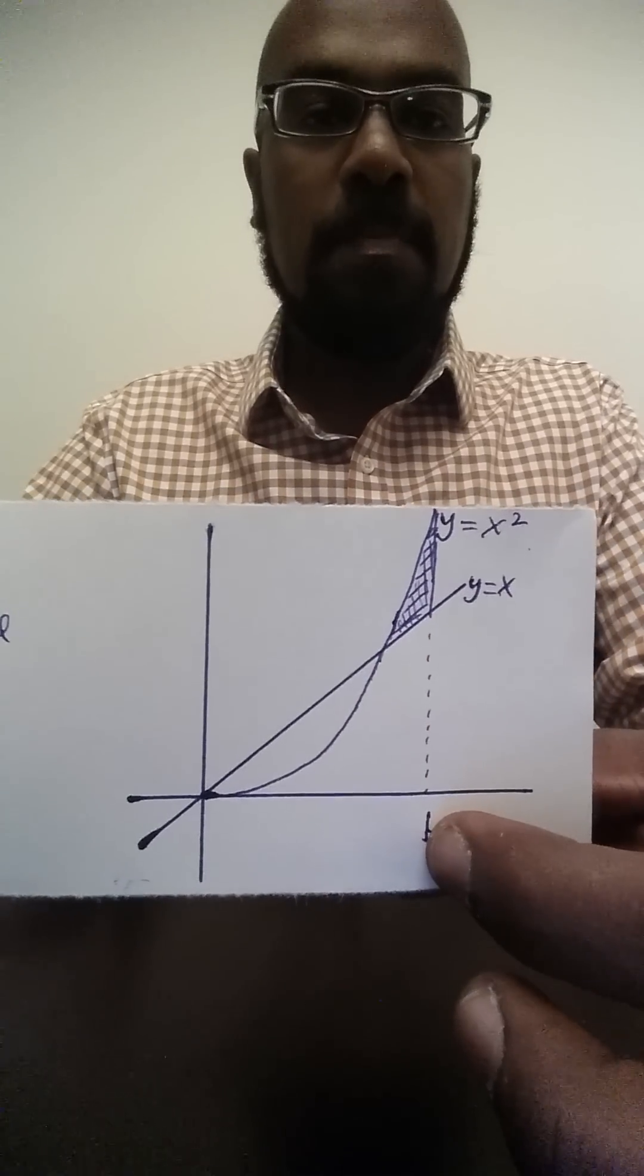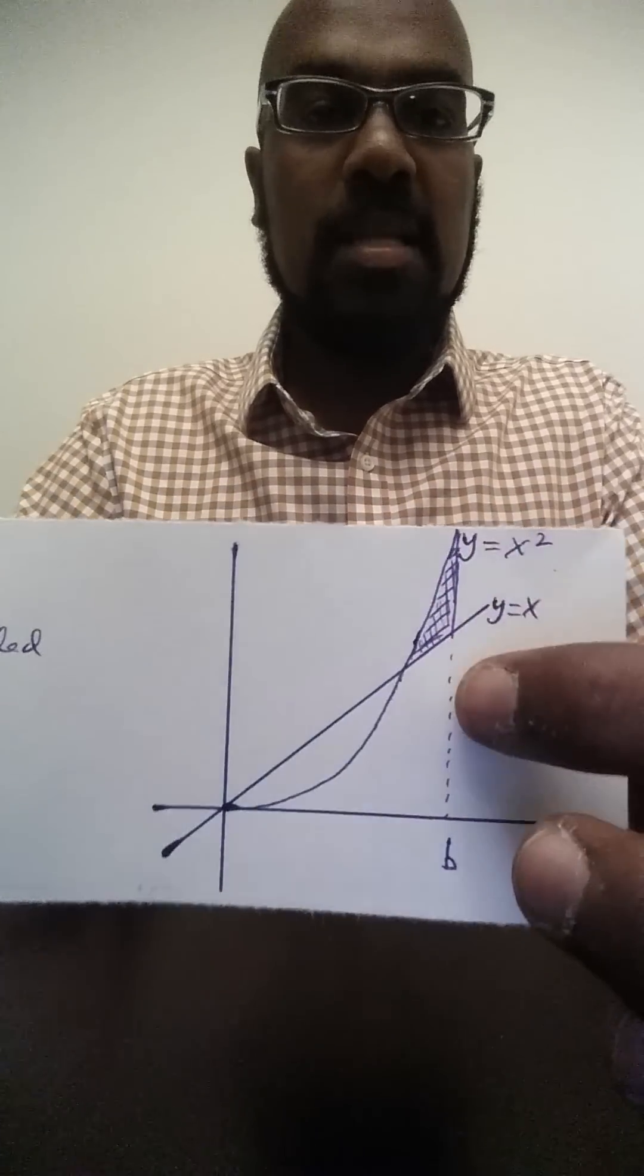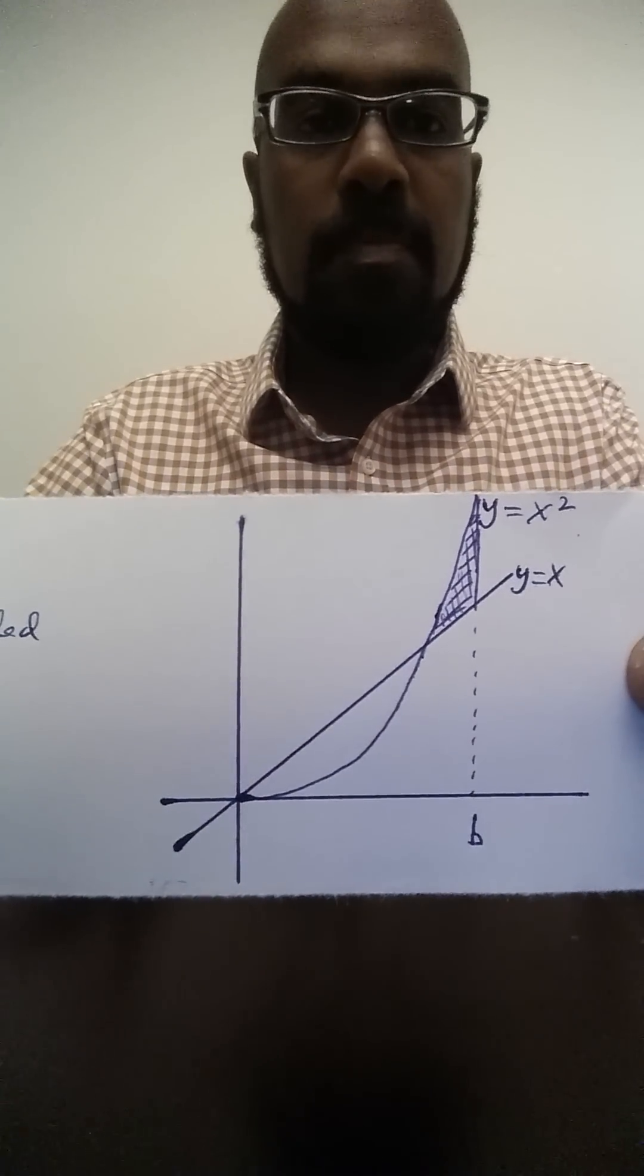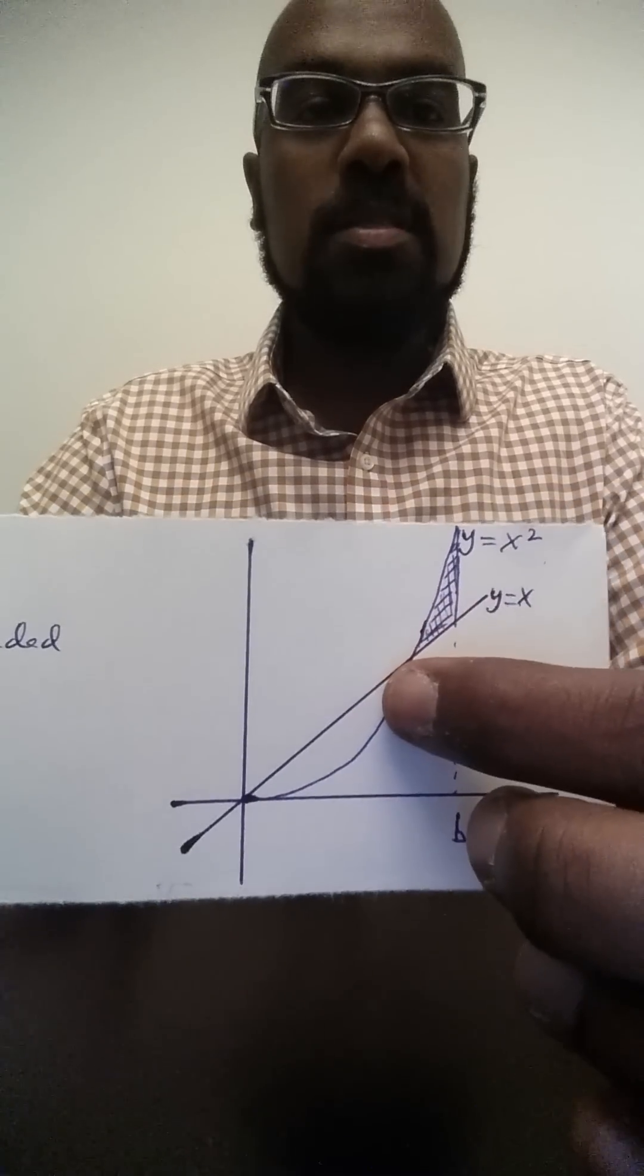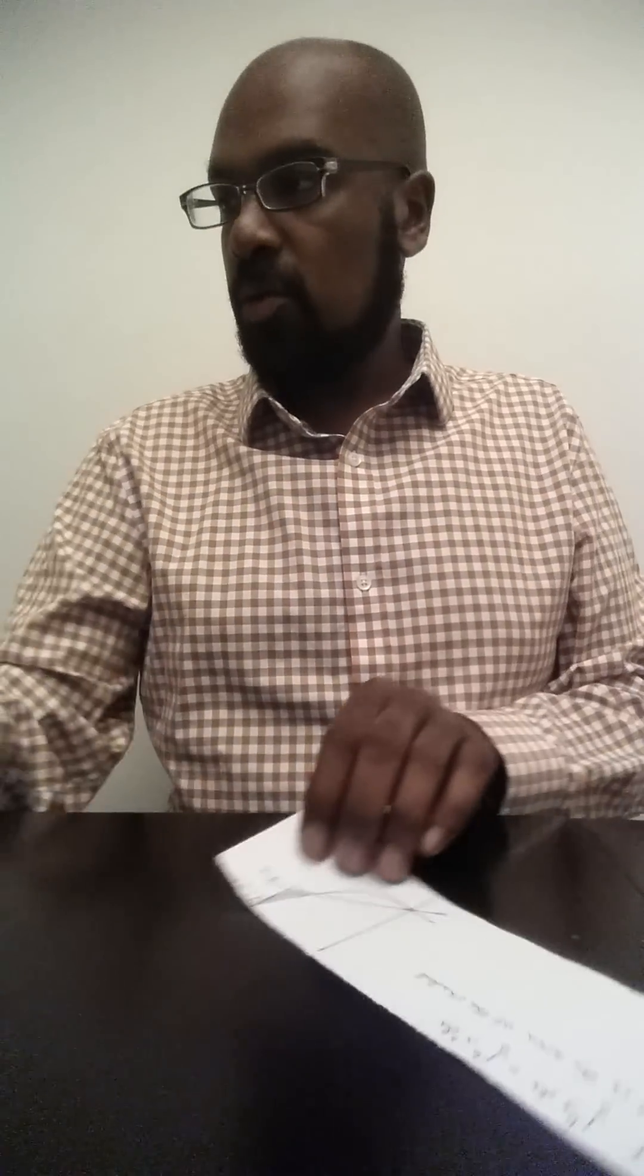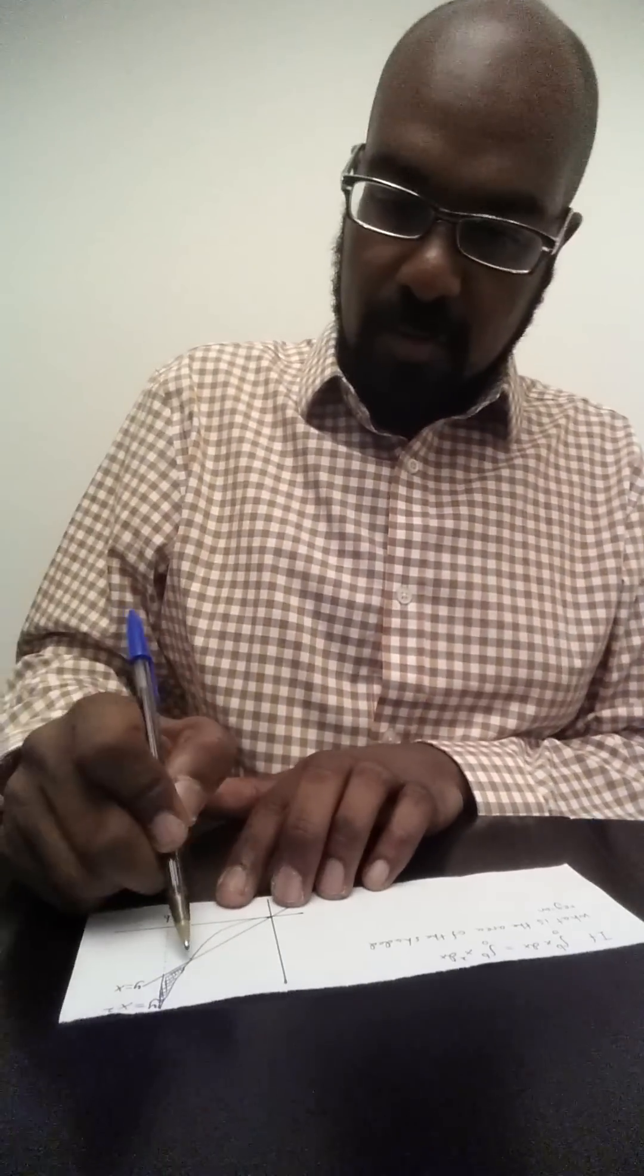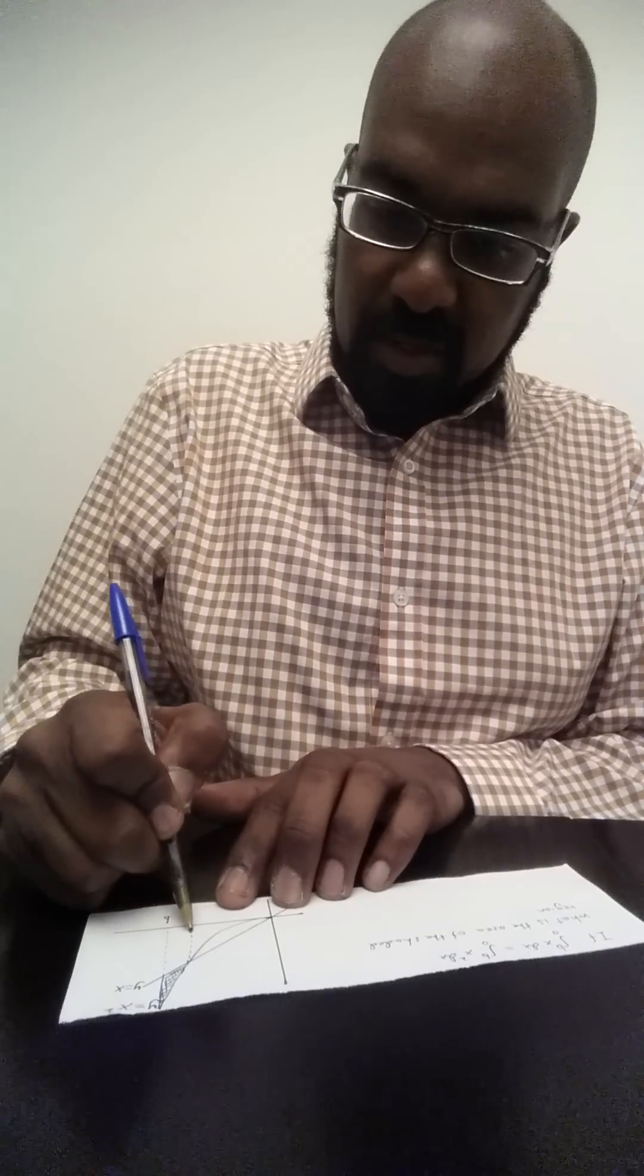And this point is the point (1,1), so we might as well label that now. The point of intersection happens when the x coordinate is 1.